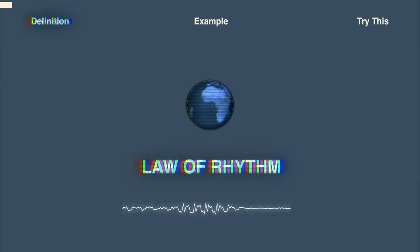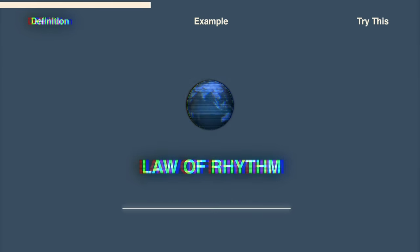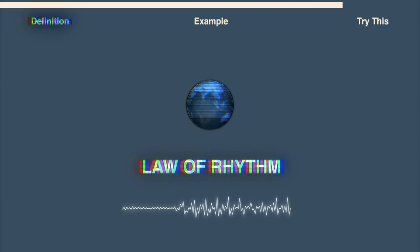The law of rhythm. This law states that everything in life has a natural cycle and rhythm to it. The waves flow back and forth. The sun rises and the sun sets. Life comes and life goes. The only constant in life is change.